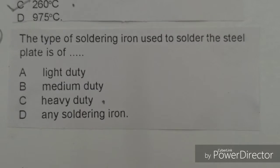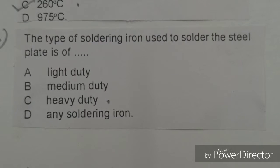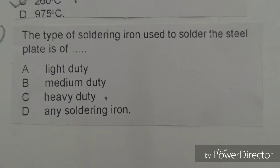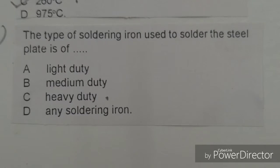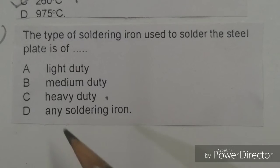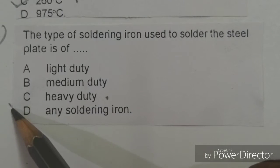Next objective: The type of soldering iron used to solder the steel plate is. Options given: light duty, medium duty, heavy duty, any soldering iron. The right answer is C, heavy duty soldering iron.